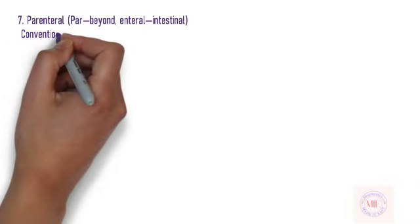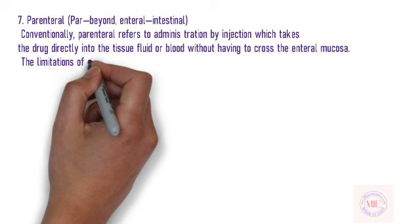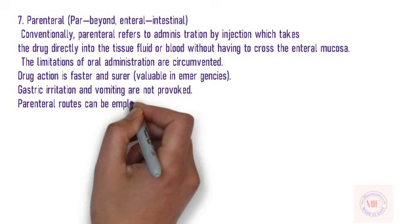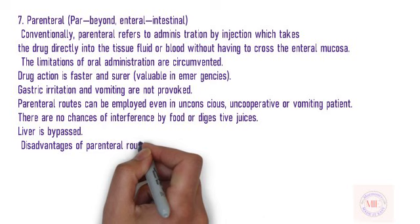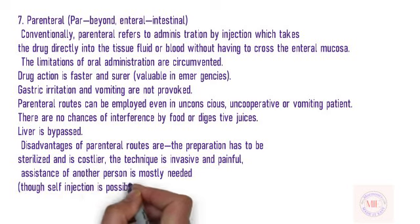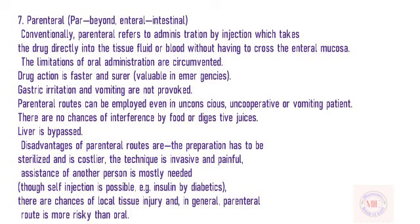Parenteral (par = beyond, enteral = intestinal): Conventionally, parenteral refers to administration by injection, which takes the drug directly into the tissue fluid or blood without having to cross the enteral mucosa. The limitations of oral administration are circumvented. Drug action is faster and surer, valuable in emergencies. Gastric irritation and vomiting are not provoked. Parenteral routes can be employed even in unconscious, uncooperative or vomiting patients. There are no chances of interference by food or digestive juices. Liver is bypassed. Disadvantages: the preparation has to be sterilized and is costlier; the technique is invasive and painful; assistance of another person is mostly needed, though self-injection is possible (e.g. insulin by diabetics); there are chances of local tissue injury; and parenteral route is more risky than oral.